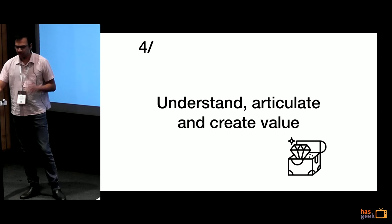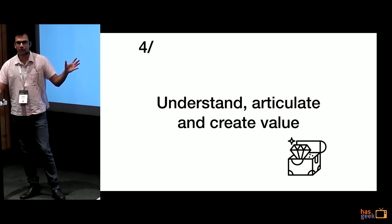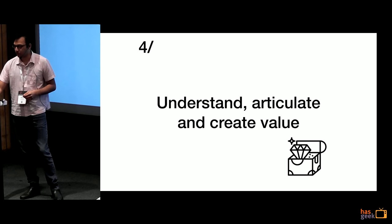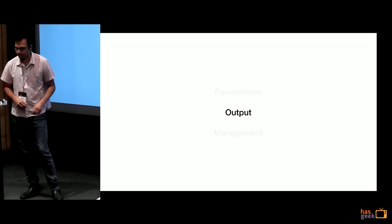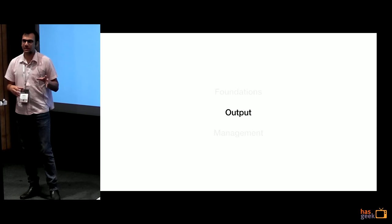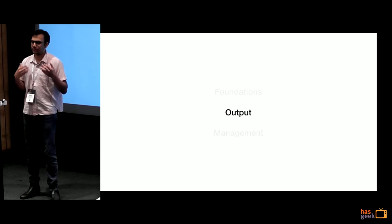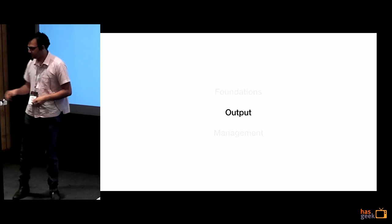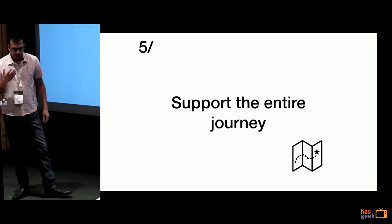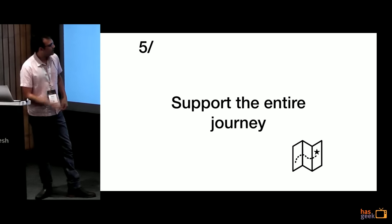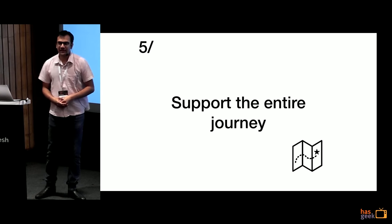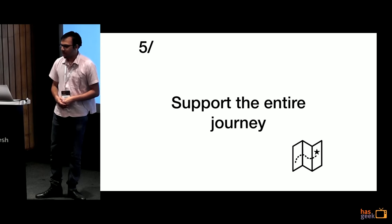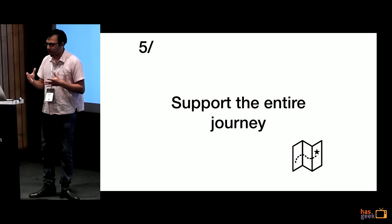It's really important to be able to understand where design drives business value and then constantly articulate that both within your organization and externally. So that's the first part — the foundation of what is needed to build an effective design org. We'll now jump to the part that is most visibly designed: the output aspects. The first quality within output is that it supports the entire journey.